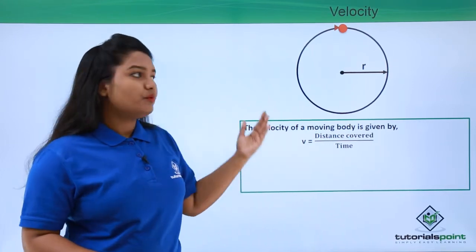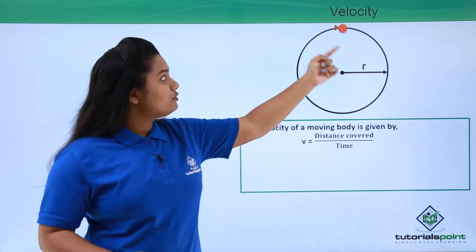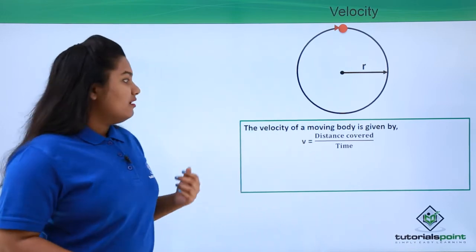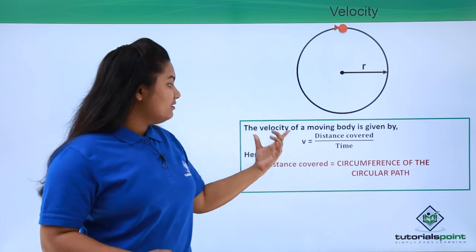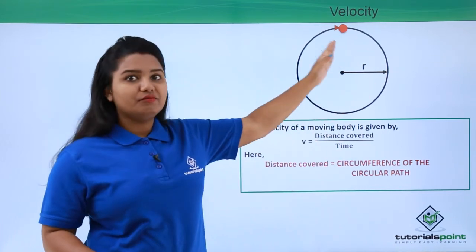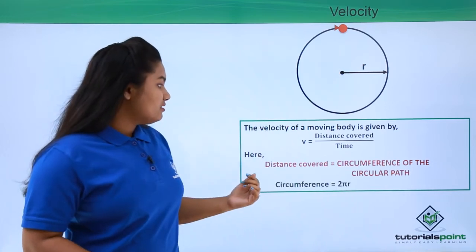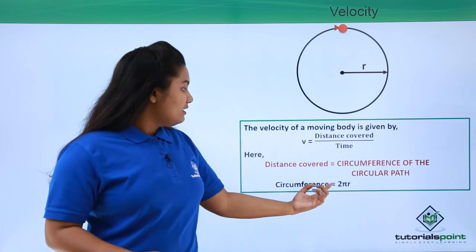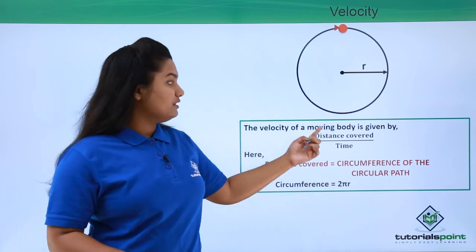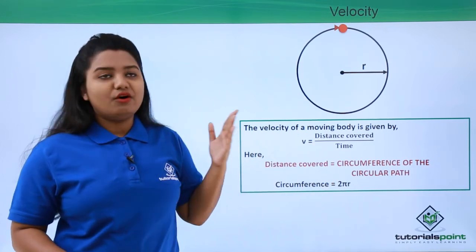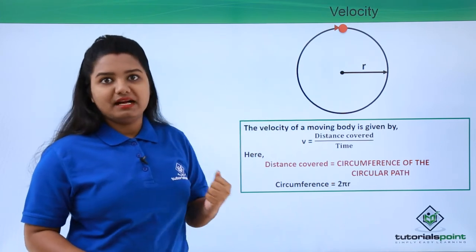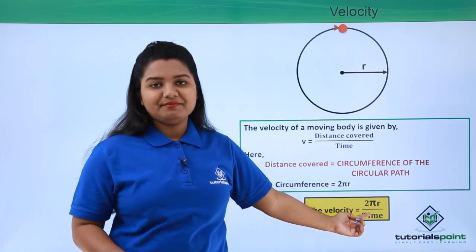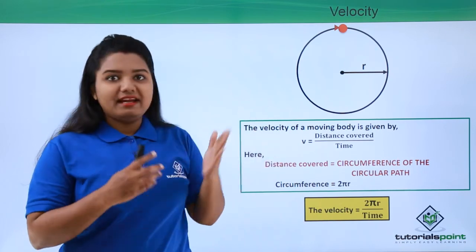For a linear path we could easily measure the distance, but for a circular path we need another formula. It is clear that the distance covered will be exactly equal to the circumference of the circle, and we know the circumference of a circle is given by 2πr. Substituting this into the velocity formula gives us the velocity of a body moving in a circular path: v equals 2πr divided by time.